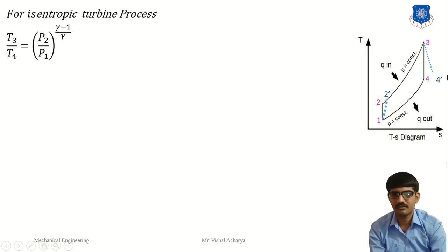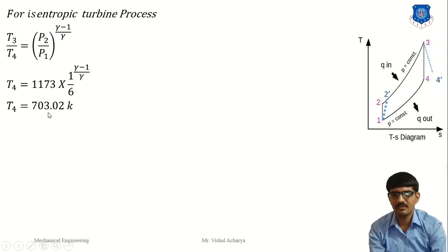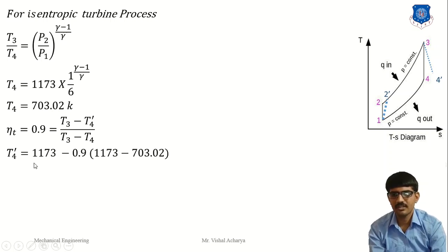Next, we find T4 and T4_dash. T4 = T3 × (1/6)^((gamma-1)/gamma). With T3 = 1173 K (maximum temperature from given data), we get T4 = 703.02 K. For turbine efficiency of 0.9, the formula is: turbine efficiency = (T3 - T4_dash) / (T3 - T4). Solving for T4_dash: T4_dash = 1173 - 0.9 × (1173 - 703.02) = 750.02 K. So we now have all temperature conditions.